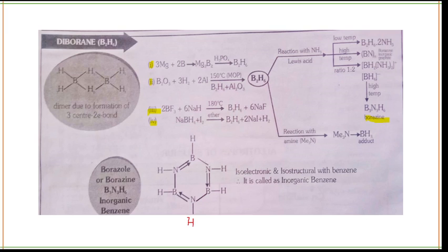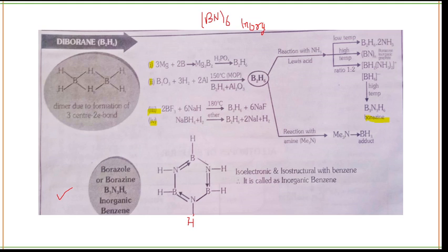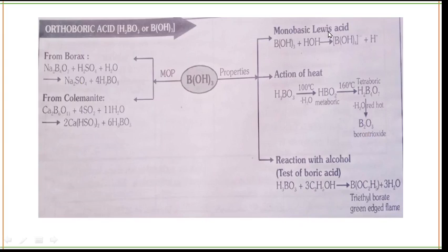The structure of borazole (B₃N₃H₆), also known as inorganic benzene, has hydrogen atoms placed at each boron and nitrogen position. Note that BN is inorganic graphite — you must learn this distinction. This was all about diborane.